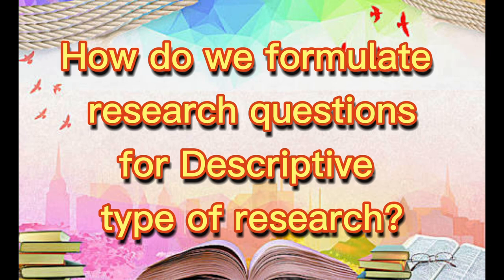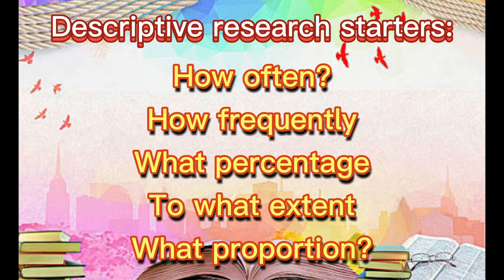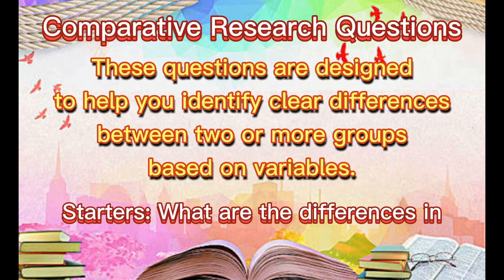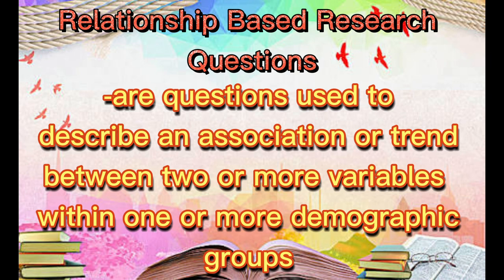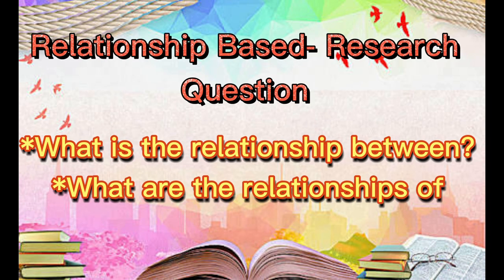How do we formulate research questions for descriptive type of research? You can start your research questions with phrases like 'how often,' 'how frequently,' 'what percentage,' 'to what extent,' 'what proportion.' For comparative research questions — questions designed to help you identify clear differences between two or more groups based on one or more variables — you can start your questions with 'what are the differences in.' For relationship-based research questions, used to describe an association or trend between two or more variables within one or more demographic groups, you can start with 'what is the relationship between' or 'what are the relationships of.'